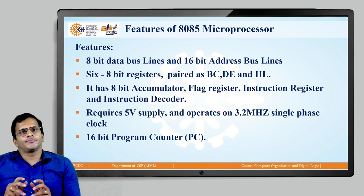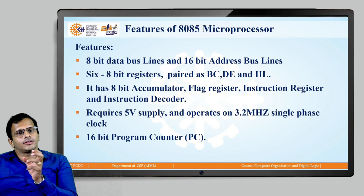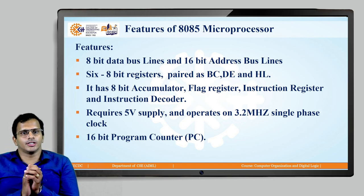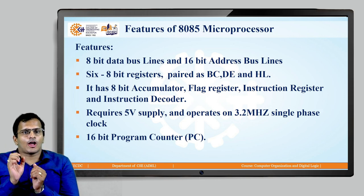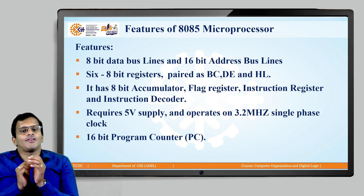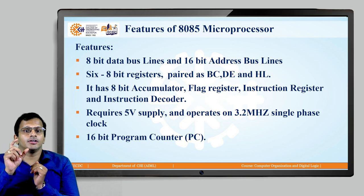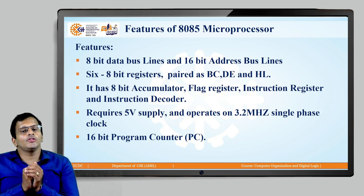Then we have the accumulator, which is the storage string register. Whatever operation is performed in the Arithmetic Logic Unit, that operation's value is stored in the accumulator — it particularly accumulates all the values. Then we have the flag register, which represents the status of the accumulator, indicating whether the value is zero, negative, or positive.